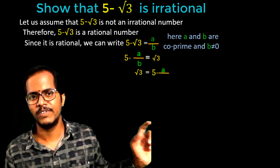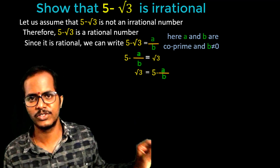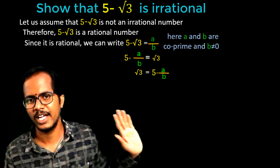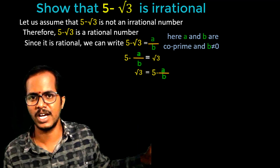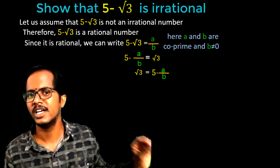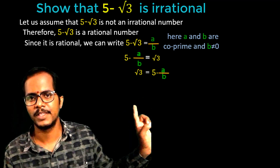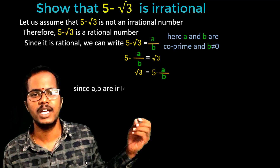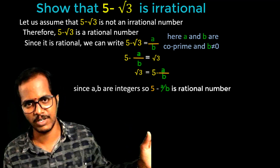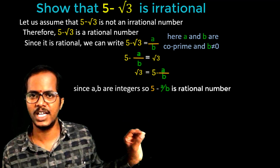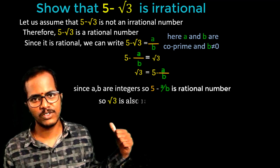On the right hand side, we have 5 and A by B. A and B both are integers, so A by B is a rational number, and 5 is also a rational number. The difference, that is 5 minus A by B, is also a rational number since rational numbers are closed with respect to subtraction. So 5 minus A by B is a rational number. That means if 5 minus A by B is a rational number, then square root 3 is also a rational number.